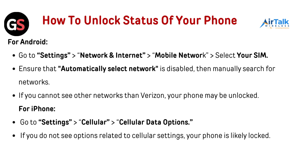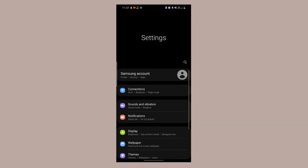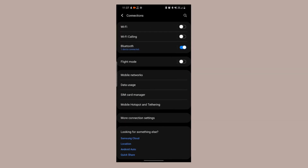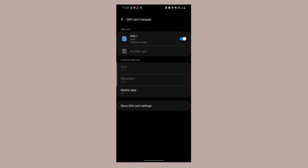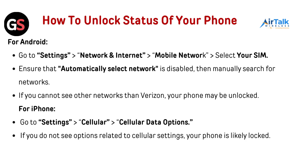To check the unlock status of your phone on Android, go to Settings, then Network and Internet, then Mobile Network. Select your SIM. Ensure that automatically select network is disabled, then manually search for networks. If you cannot see other networks besides Verizon, your phone may be locked.